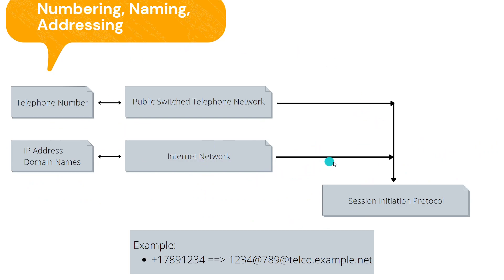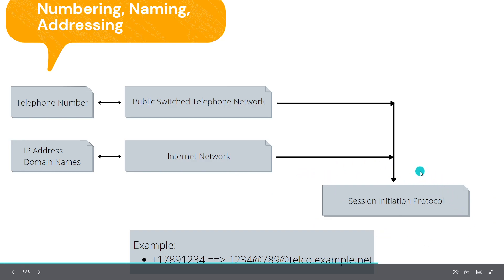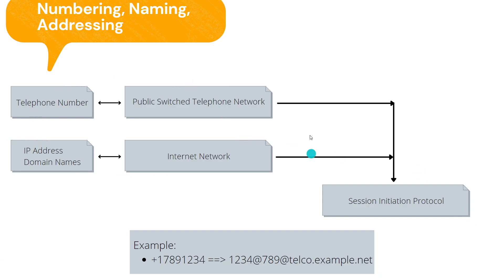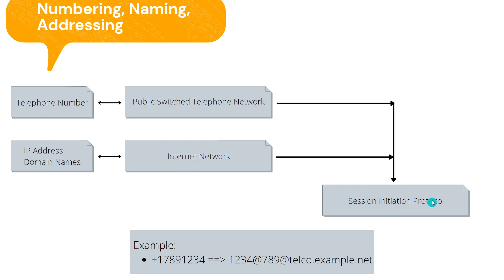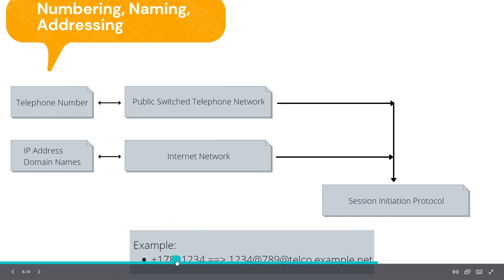Now I'm going to explain about the Session Initiation Protocol, or SIP. Here is a schematic for SIP. Basically, the telephone number we use goes through a PSTN, or Public Switched Telephone Network, while IP addresses and domain names use the internet network. In order to exchange between these two, the Session Initiation Protocol is used. It is recommended by the ITU that there is a Number-to-Universal Resource Identifier (N2URI). Here is an example where a phone number is changed into the Universal Resource Identifier using SIP.